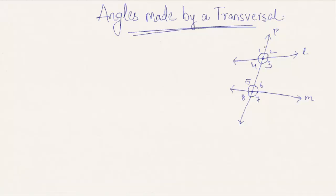Let us discuss the diagram given here. In this diagram, L and M are two lines intersected by transversal P at two distinct points, forming eight different angles.